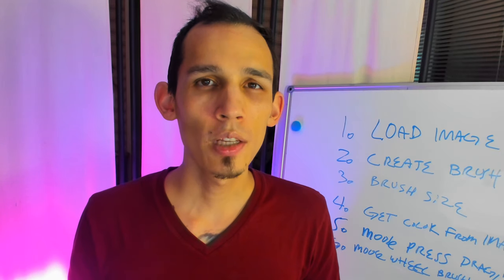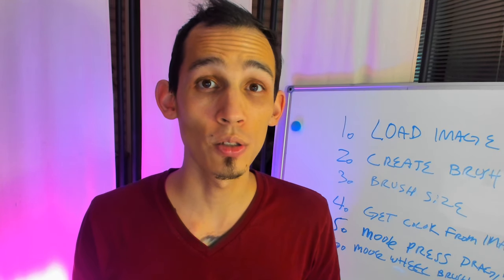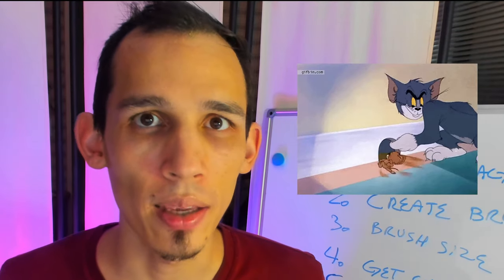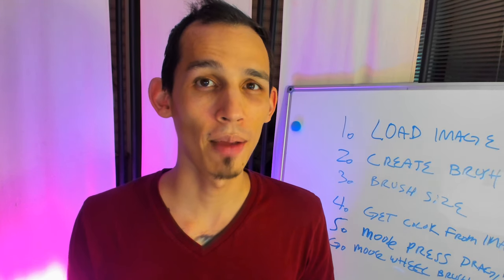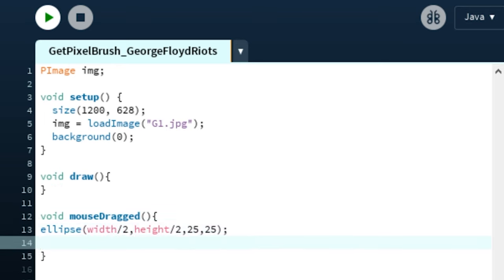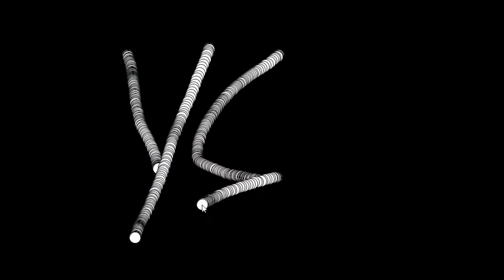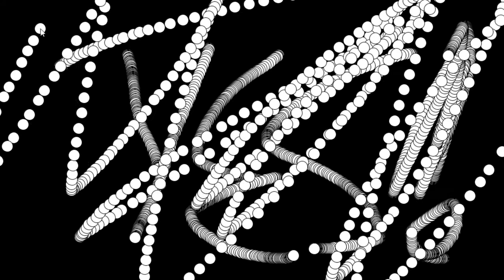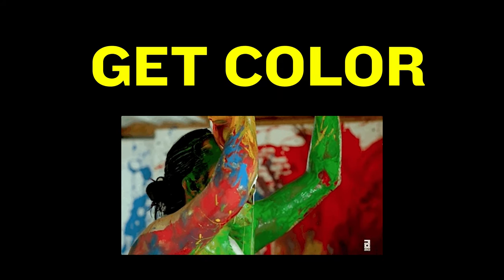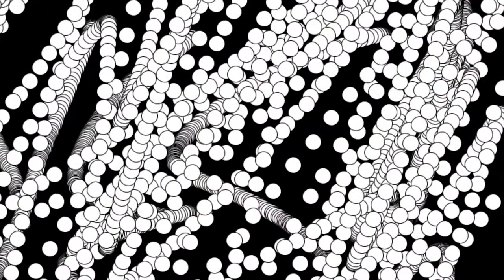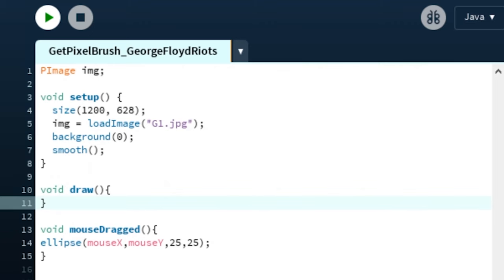Interactivity! Let's start with mouse drag. This way the mouse starts drawing every single time it's dragged. Yes — this brush is really dull though, so next we're gonna want to add color.